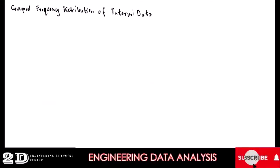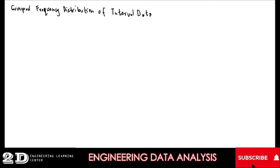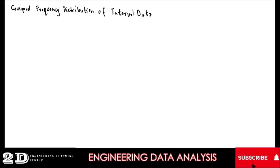Okay, so now we will be tackling the topic of grouped frequency distribution of interval data. So basically, we are now trying to have representation of grouped data. Grouped data, as previously defined, is data that are presented by frequency distribution. The very first way to group data is to tally them or to present them in a frequency distribution table.